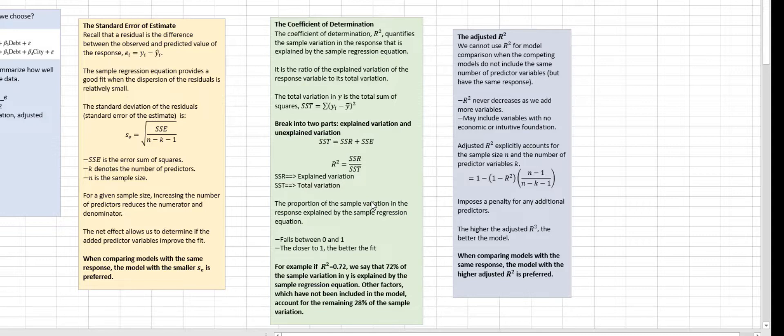So the total variation in our response variable, or we can call it Y, is the total sum of squares, which is SST. SST equals yi minus y bar. Here, y bar represents the average value of the response variable. In our case, it's earnings. Yi refers to the single observations in the earnings column. You can break this total sum of squares into two parts: explained variation and unexplained variation. So R square is explained variation divided by total variation.